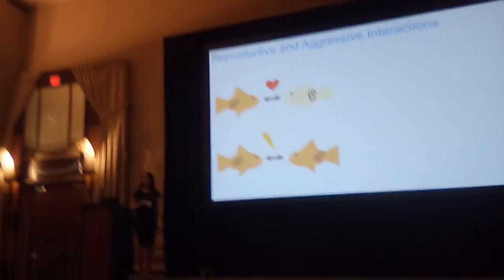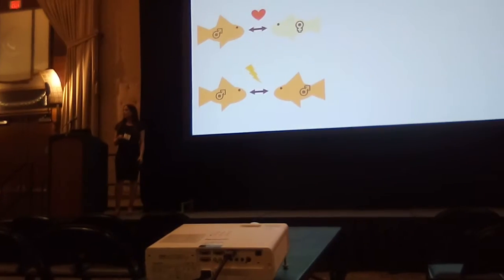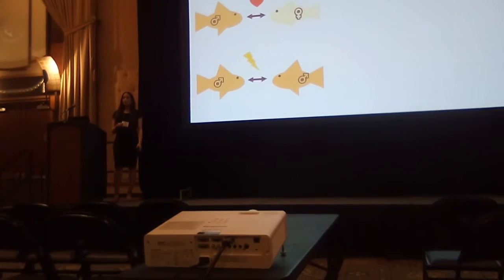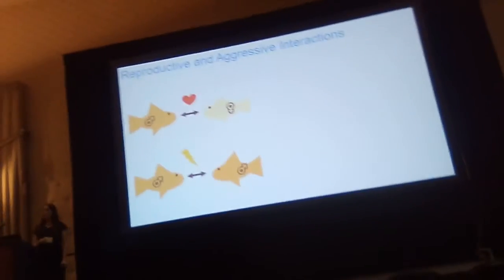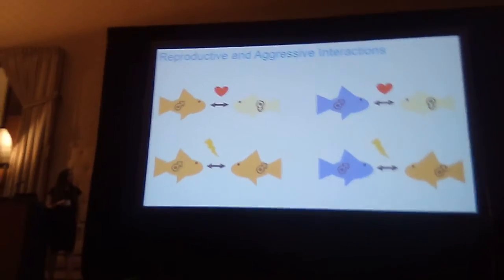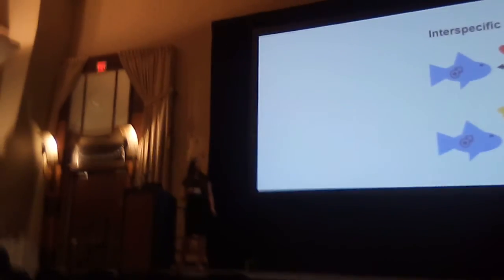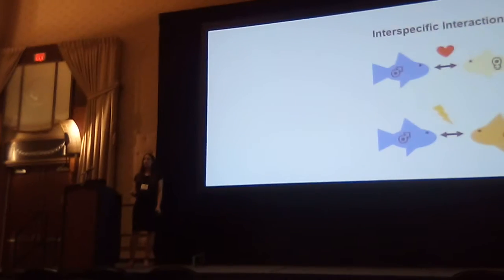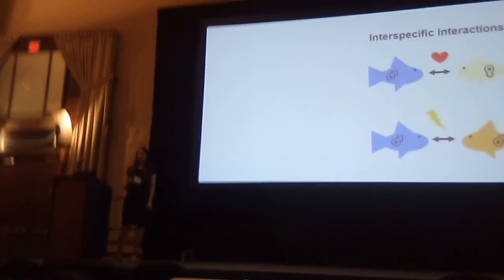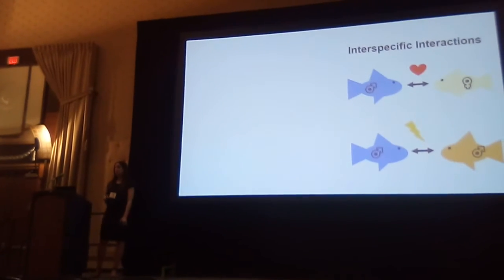When we think about reproductive interactions between species, like courtships or aggressive interactions like fighting over access to mates or territories, we typically think of these as happening between members of the same species. These types of interactions can also happen between members of two different species, and we're increasingly recognizing that these interspecific interactions are quite common and can have really large-scale ecological and evolutionary consequences.